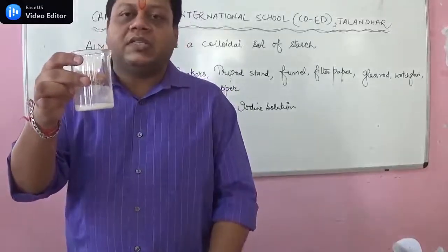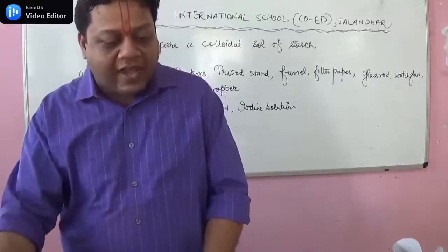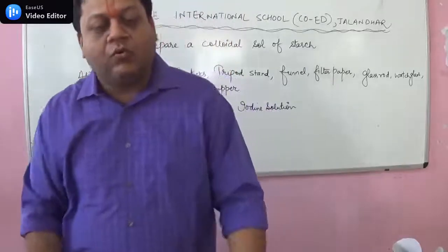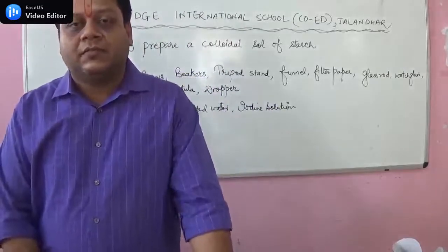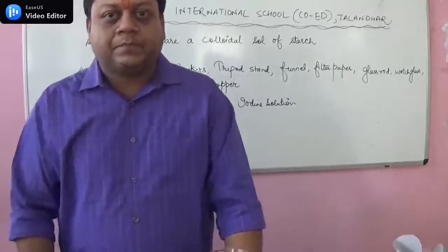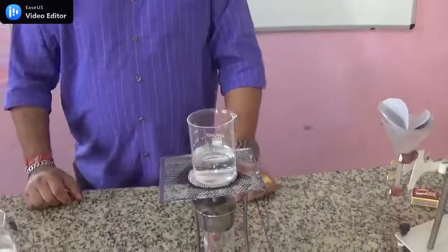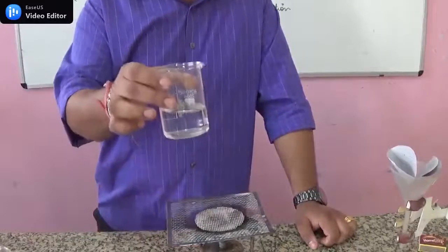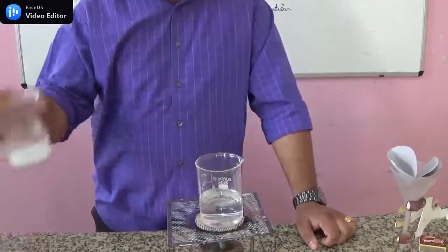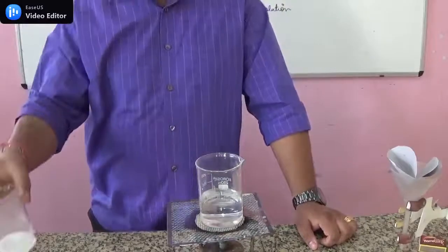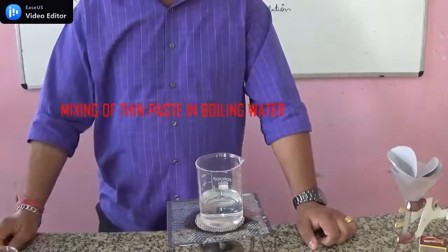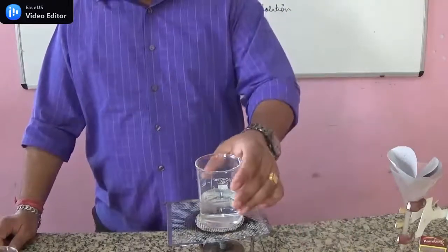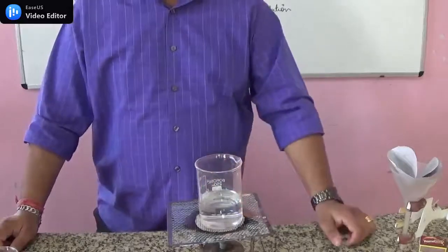Now we have to put this thin paste of starch into boiling water. We have put 100 ml of water in a beaker and we are boiling it over a spirit lamp. We have to add the thin paste into boiling water so that no lumps of starch are formed. If you use cold water, lumps will form and the starch will not dissolve properly. So we have kept the water boiling for 5 to 10 minutes.